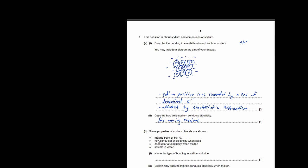Question 3b: some properties of sodium chloride are shown — melting point 801°C, non-conductor when solid, conductor when molten, and soluble in water. Name the type of bonding in sodium chloride. Sodium is group 1 and chlorine is group 7. Whenever group 1 meets group 7 to form a salt, the bonding is ionic. Sodium has 1 electron in its valence shell, and chlorine has 7. Sodium gives its electron to chlorine to form an ionic bond. The type of bonding is ionic bonding.